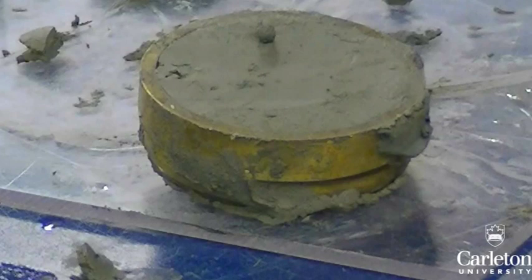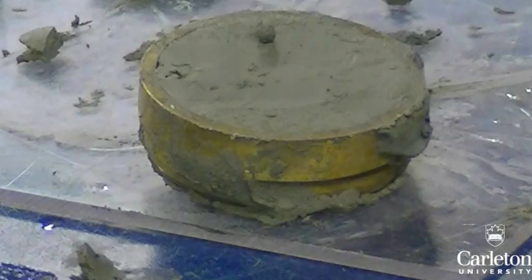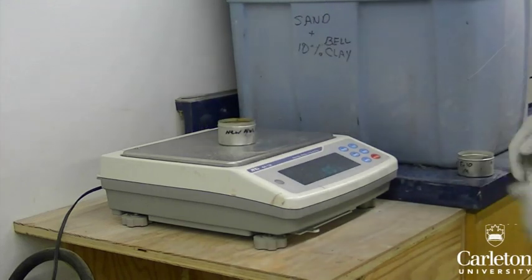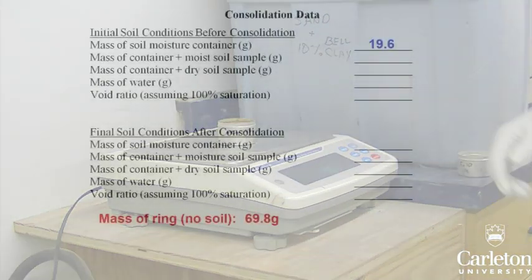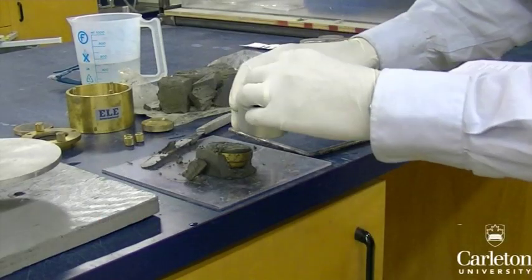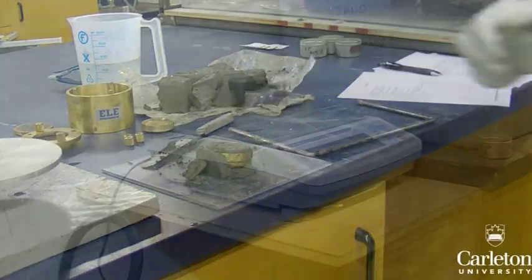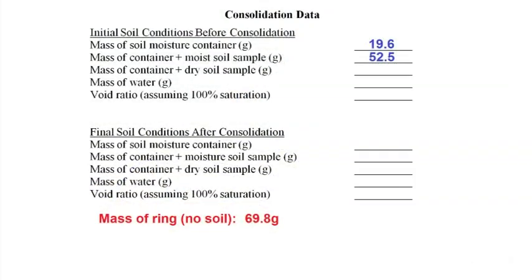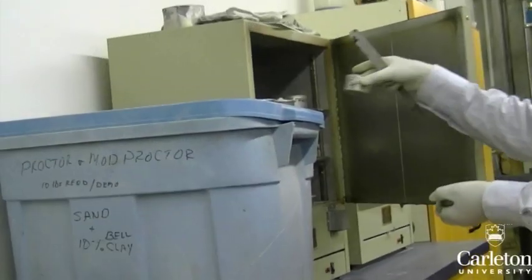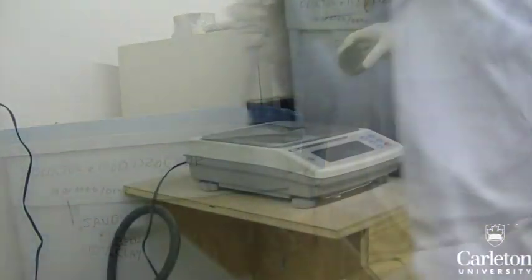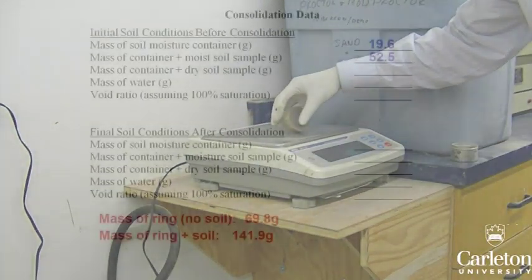This is what the sample should look like before you begin the test. You will need to find the moisture content of the sample before consolidation. Take a labeled moisture container, record its mass, then take a small sample of the excess soil, place it in the container, and record the mass of the container plus moist soil. Place the sample in an oven for 24 hours to dry. Finally, record the mass of the ring plus soil.